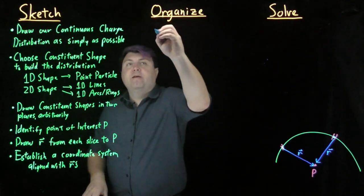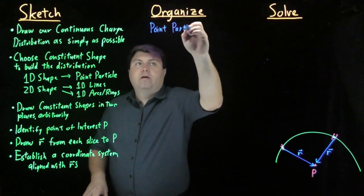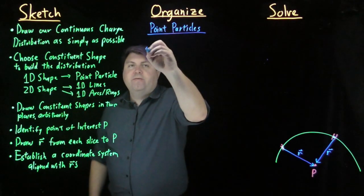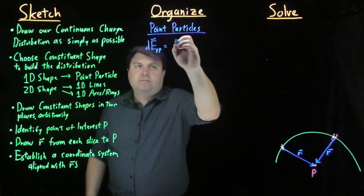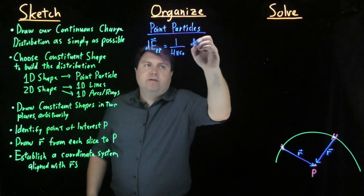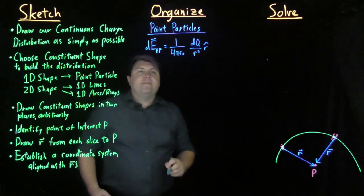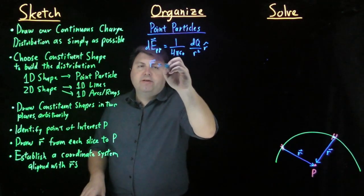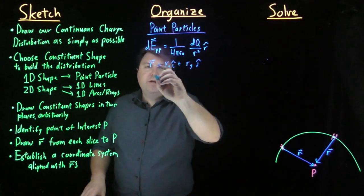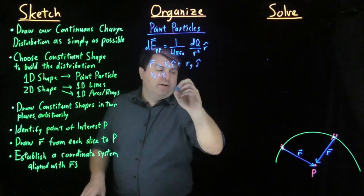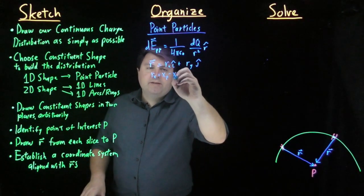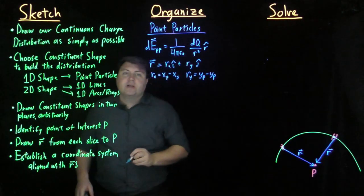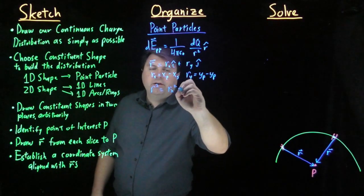For my organized step, if we're doing point particles, we're composing point particles to make a one-dimensional shape, then the differential electric field of a point particle is one over four pi epsilon naught dq over r squared r hat. We know what to do with this. We find our vector, which is equal to r_x i hat plus r_y j hat, where r_x is equal to the x-position of our point P minus the x-position of the slice, and r_y is equal to the y-position of point P minus the y-position of the slice. Then we get from this that r squared is equal to r_x squared plus r_y squared.